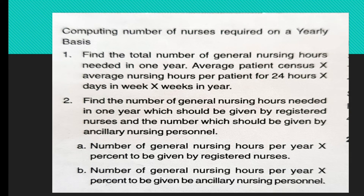In the same way, you can calculate on a weekly basis. Instead of weeks in a year, you use days in a week. The formula is: average patient census multiplied by average nursing care hours per patient day in 24 hours, multiplied by days in a week — to compute the number of nurses required on a weekly basis.